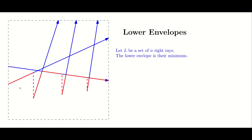We can still talk about the complexity of the lower envelope, which we count as the number of line segments or edges in this minimum diagram. The number of discontinuities is bounded: since every ray has exactly one vertex, the number of discontinuities is at most n. But it is no longer true that a line can appear at most once in the lower envelope — for example, in this picture, one ray contributes three edges to the lower envelope.